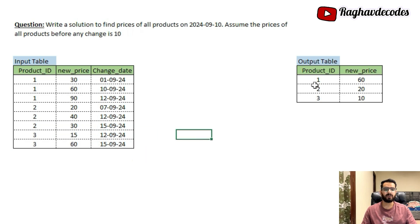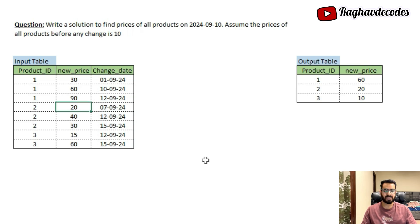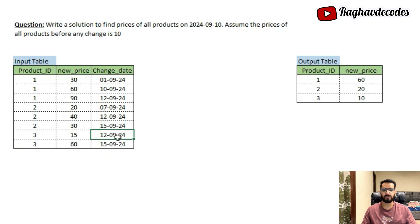So on the output table, on 10th September: product ID 1 has a price of 60 rupees; product ID 2 has a price of 20 rupees, since the last price change was on 7th and no change occurred before 10th; and for product ID 3, since the first price change was on 12th September, we use the base price of 10 rupees.